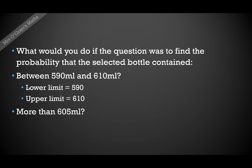If it was the probability that it contains more than 605 millilitres, then you'd put your lower limit at 605. And your upper limit — since there is no real upper limit on a normal distribution — we make it a really big number, just like in the first example where you made it a really big negative number for the lower limit. Then you can read off your probability straight from the calculator.